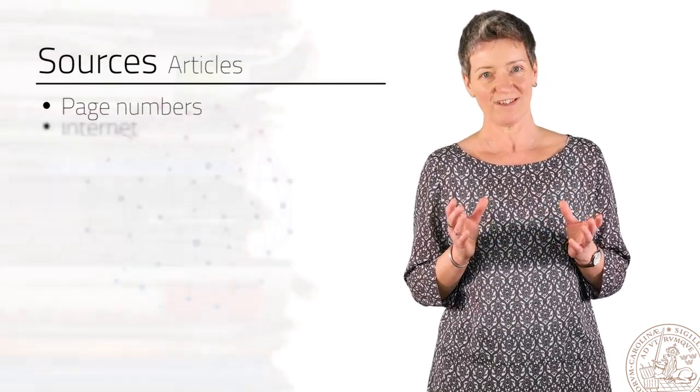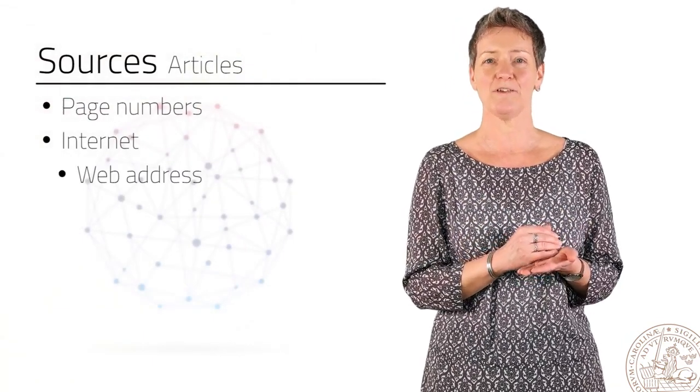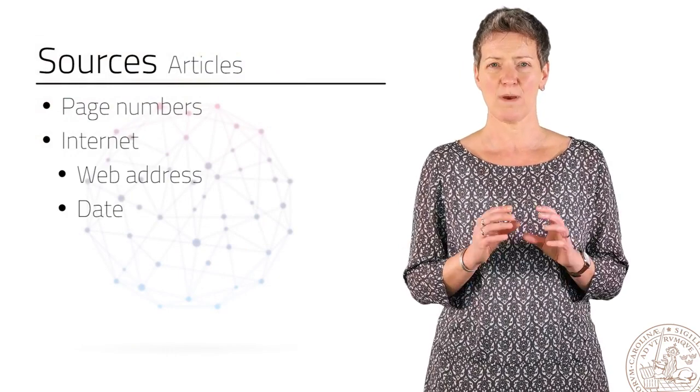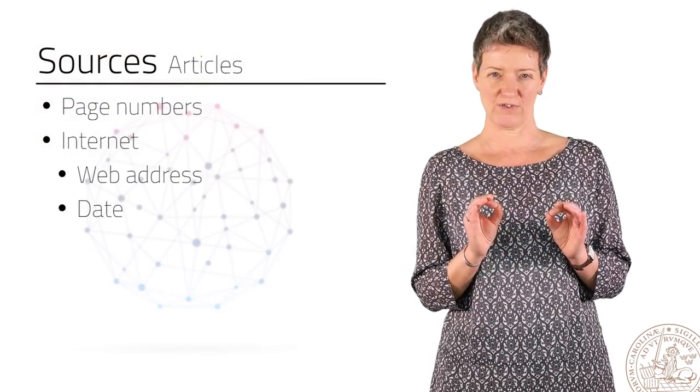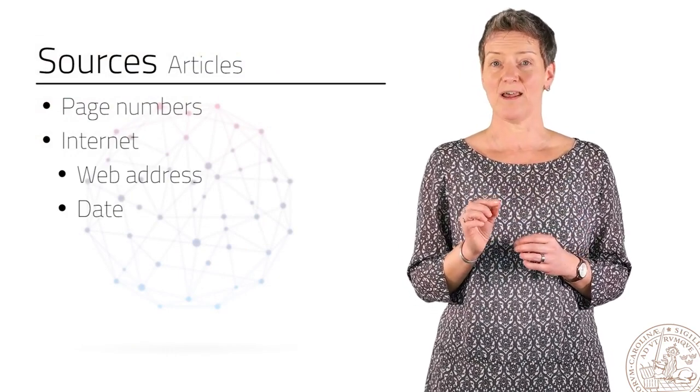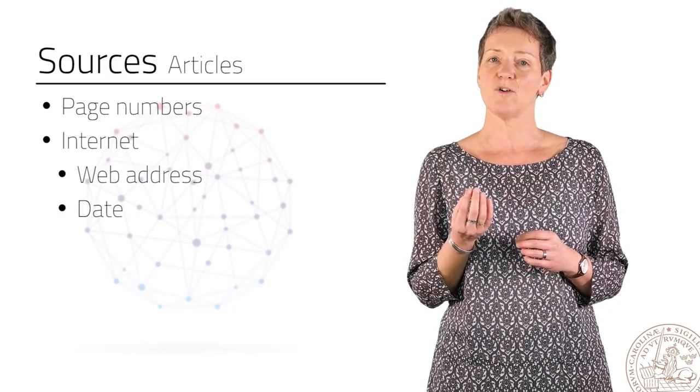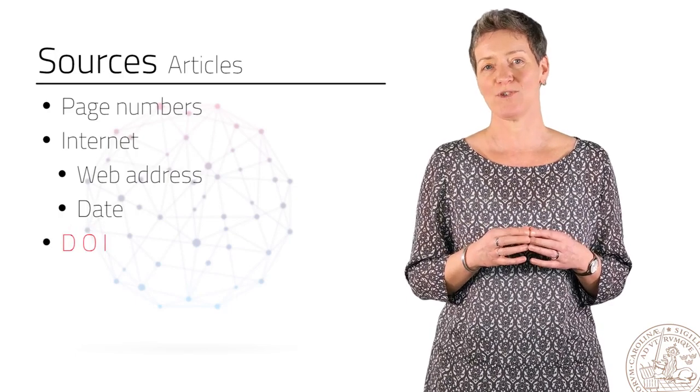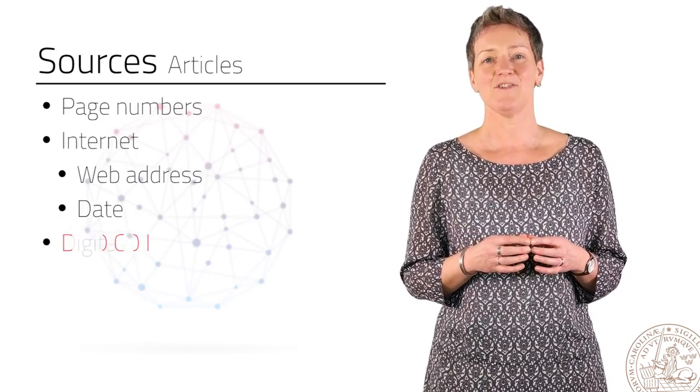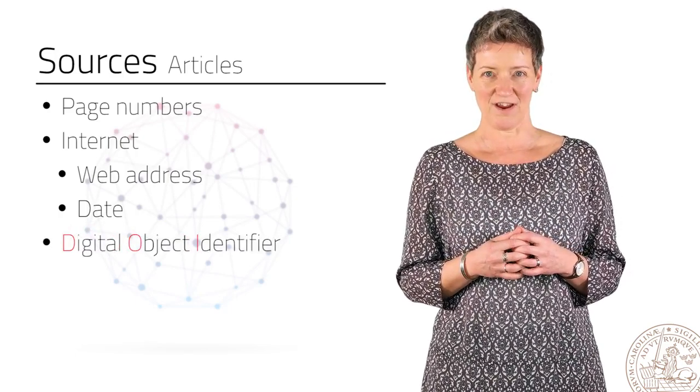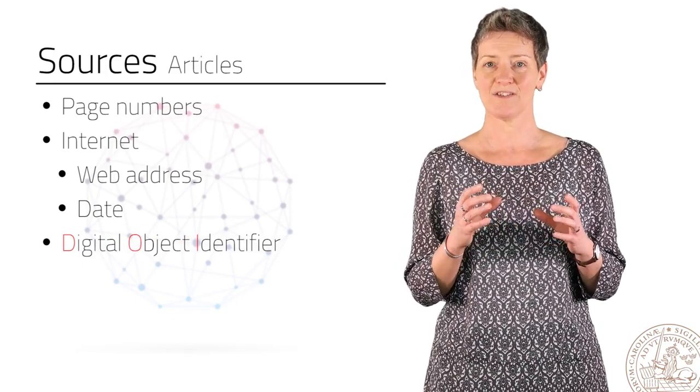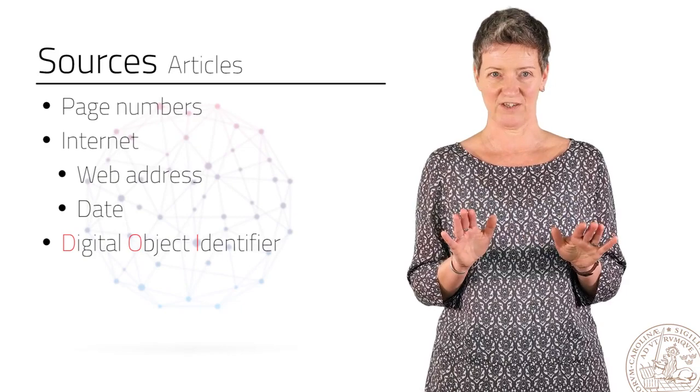And if you took the article from the internet, you often need to include the web address and the date you accessed the article. Web addresses are not always constant. Because of this, and because of the fact that articles may be locked into a database that needs a login, something called DOI was created. It means Digital Object Identifier, and is an article's unique code on the web. And this code is stable. It does not change over time.